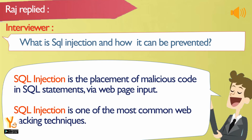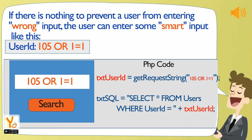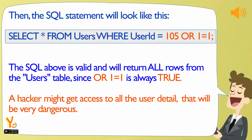SQL injection is the placement of malicious code in SQL statements via web page input, and is one of the most common web hacking techniques. For example, the original purpose of code may be to create a SQL statement to select a user with a given user ID. If there is nothing to prevent a user from entering wrong input, the user can enter some smart input, making the SQL statement return all rows from the users table. A hacker might get access to all user details, which is very dangerous.